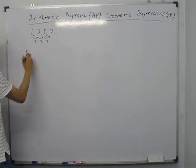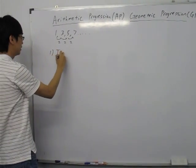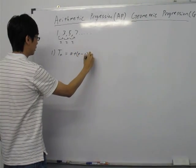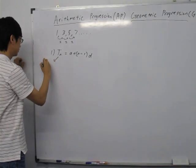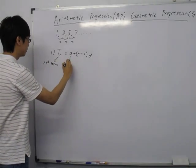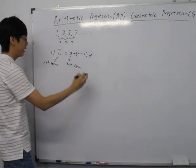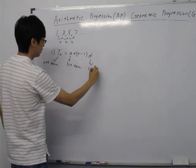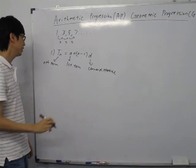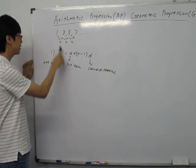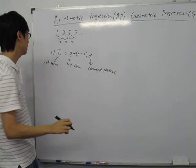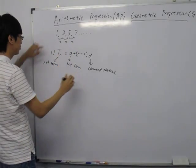So we come to the first formula, which is the N-th term, TN, equals A plus (N minus 1) times D. TN stands for the N-th term, A stands for the first term — in this case it is 1 — and D stands for the common difference — in this case the common difference is 2.